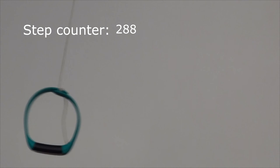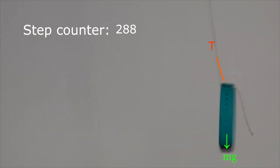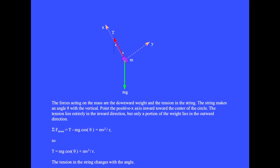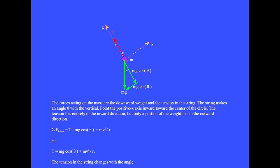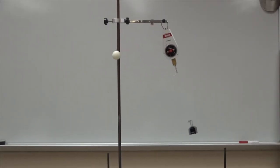This mass is tied on a string and swinging as a pendulum. The forces acting on the mass are the weight and the tension. The string makes an angle theta with the vertical, and the positive x-axis points inward toward the center of the circle. The tension lies entirely along the inward direction, but only a portion of the weight lies in the outward direction. The sum of the inward and outward forces is plus T minus Mg cosine theta equals Mv² over R, giving T equals Mg cosine theta plus Mv² over R. The tension in the string is changing with the angle — if you were holding the top of the string, you'd have to tug harder as the mass moves through the low point in its path.